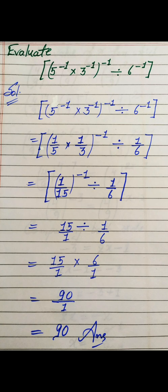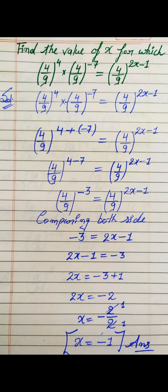The next question: find the value of x for which (4/9)^4 × (4/9)^−7 = (4/9)^(2x−1). We simplify the left-hand side. Both rational numbers on the left have the same base 4/9 and are in multiplication, so their powers add: (4/9)^(4 + (−7)) = (4/9)^(2x−1). Simplifying: (4/9)^(4−7) = (4/9)^(2x−1), which gives (4/9)^−3 = (4/9)^(2x−1).